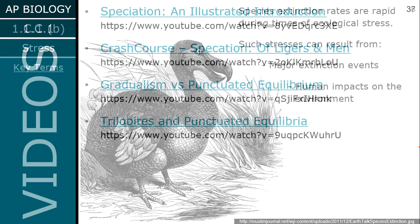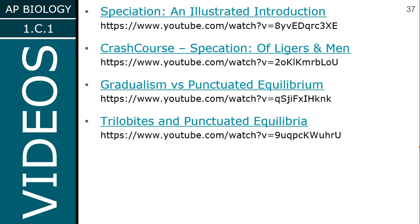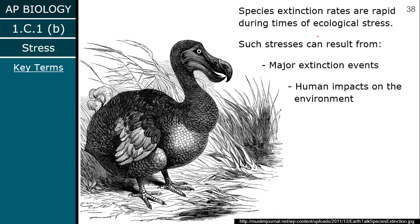To summarize speciation, here are some videos to introduce you to how one species becomes two, differentiating between gradualism and punctuated equilibrium, as well as interesting examples like ligers — which are real, but have a lot wrong with them. It's similar to the mule situation: they are not fertile themselves, so they are not a species.